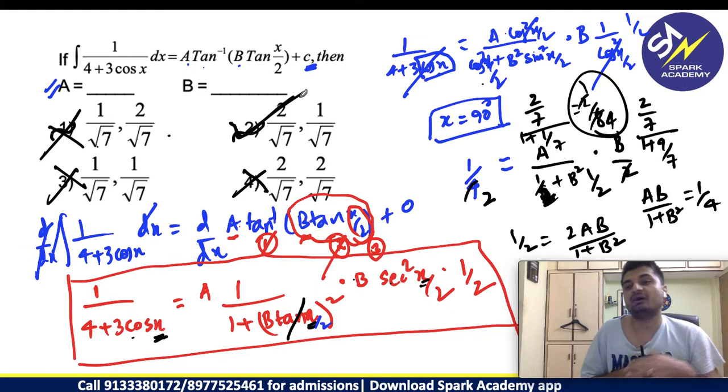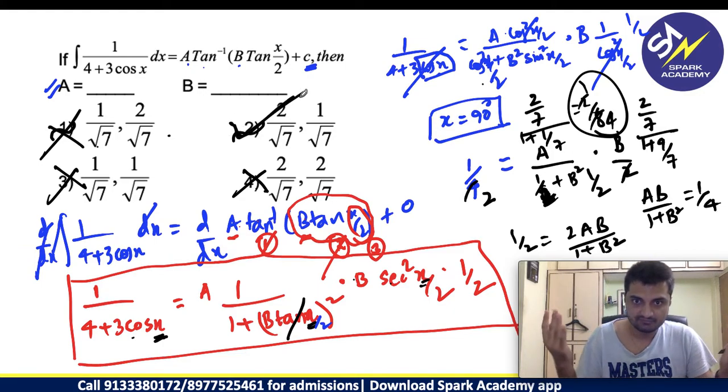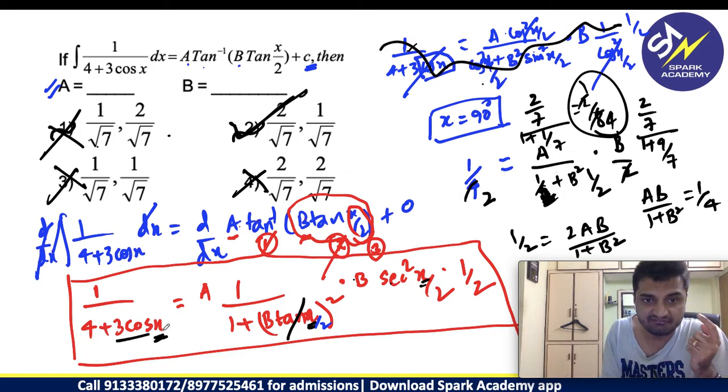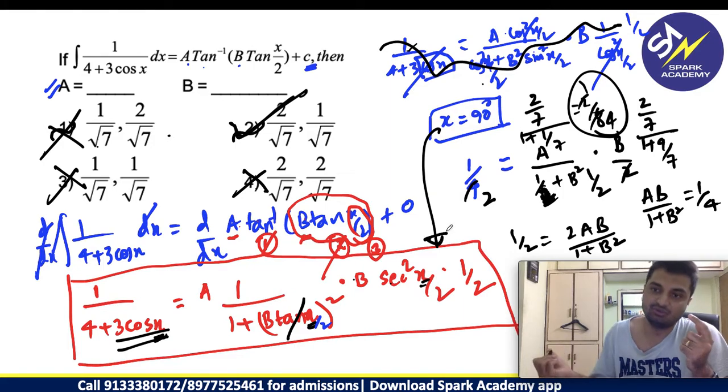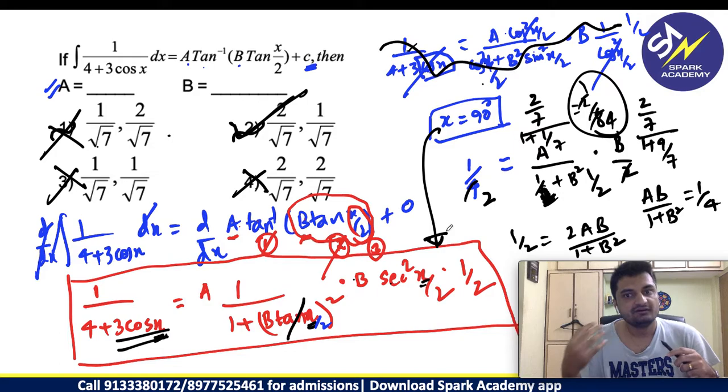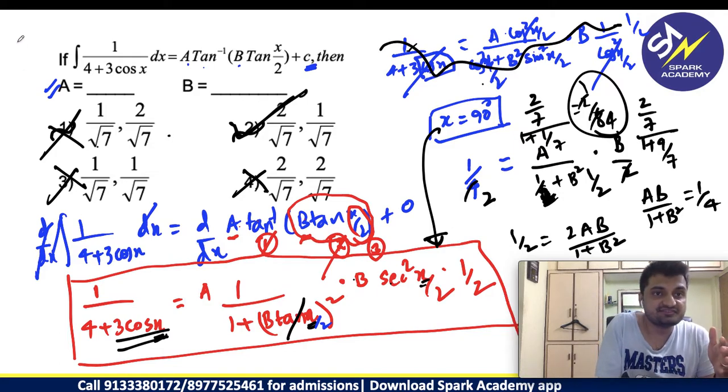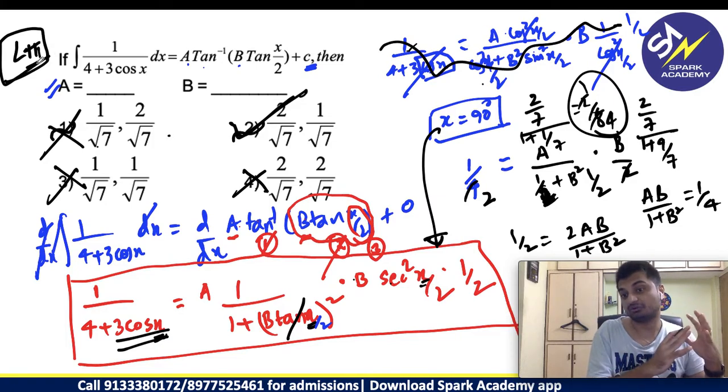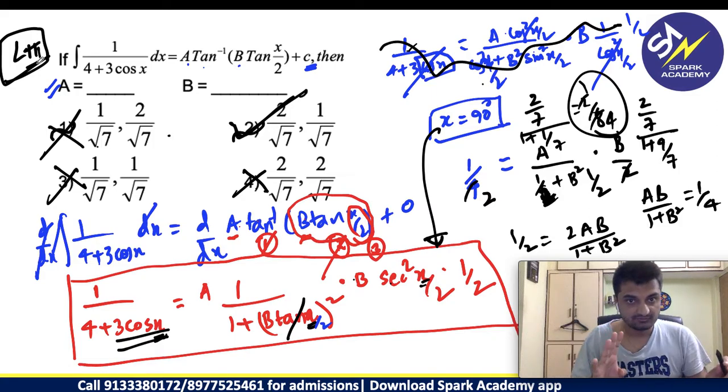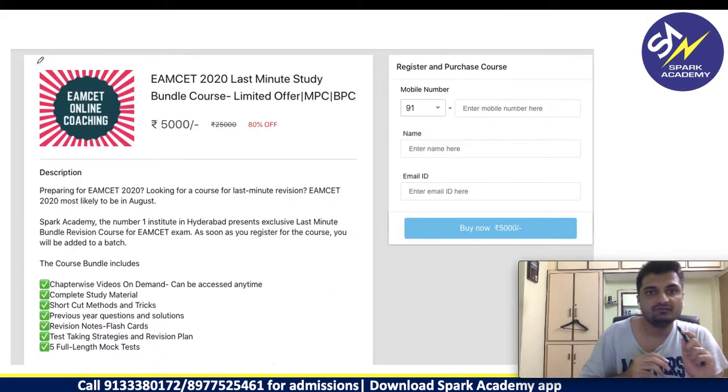First will be the answer. How will first be the answer? You will get 2 by 7 whole divided by 1 plus B square, 1 plus 1 by 7, 8 by 7. Basically we are getting 2 by 8 which is 1 by 4. LHS is equal to RHS. Second option is the answer. Actually, you need not even do this. If you are getting confused, you simplify like this. Otherwise, you need not even do this. You can just give x equals to 90 here as well if you are not comfortable with the calculations.